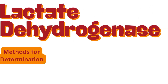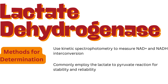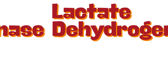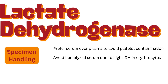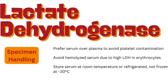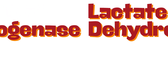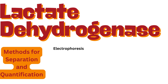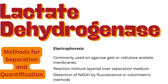Methods for determination: assays use kinetic spectrophotometry to measure NAD and NADH interconversion, commonly employing the lactate-to-pyruvate reaction for stability and reliability. Specimen handling: prefer serum over plasma to avoid platelet contamination; avoid hemolyzed serum due to high LDH in erythrocytes. Store serum at room temperature or refrigerated — not frozen at minus 20 degrees Celsius. Reference intervals: adults, 125 to 220 units per liter; higher in children, decreasing with age. Electrophoresis is commonly used on agarose gels or cellulose acetate membranes, with detection of NADH by fluorescence or colorimetric methods.